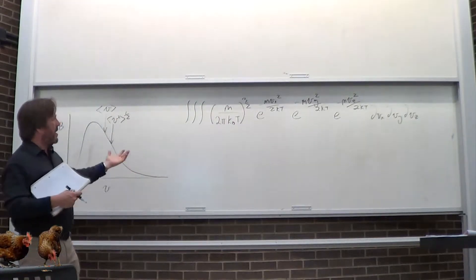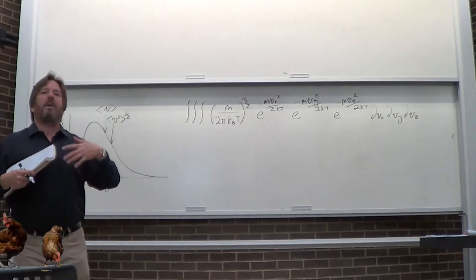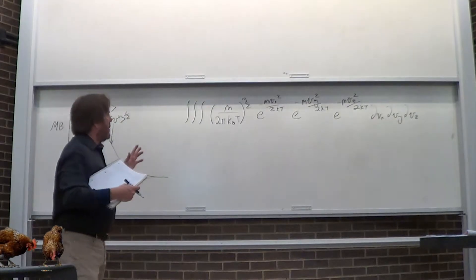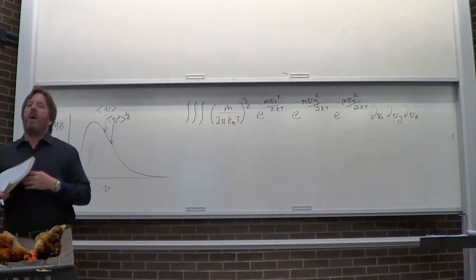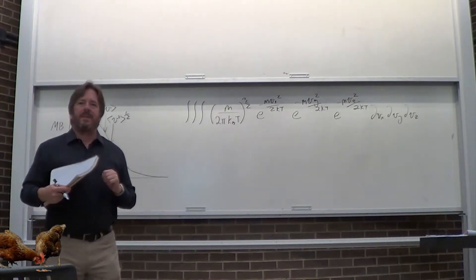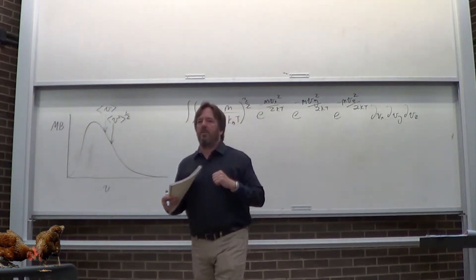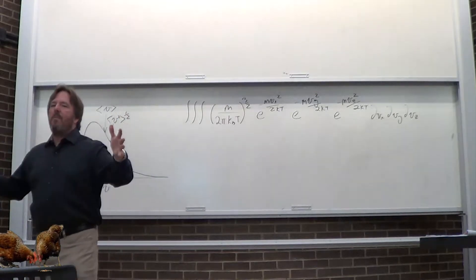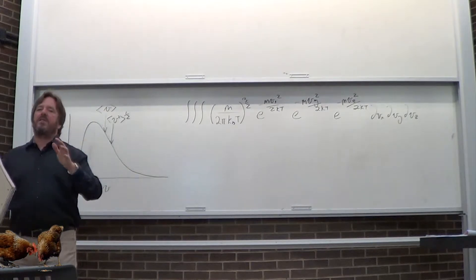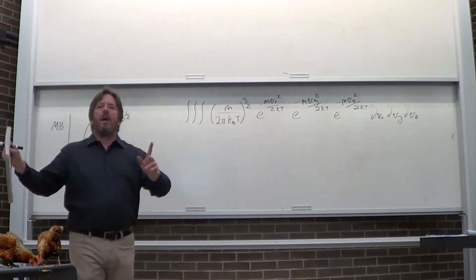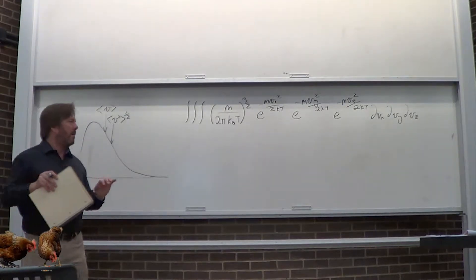So what do I do with this? Now that I have it, what can I get out of it? Here's a hypothetical exam question: what number of molecules are moving up? What's the probability of a molecule moving up? If I have a gas, how many have a velocity in the positive z direction? What fraction of molecules in a gas chamber are moving up? What's the probability they're moving up? Those are all the same question.